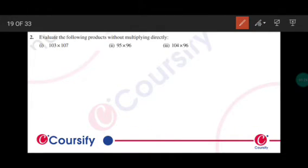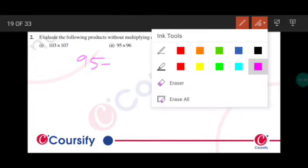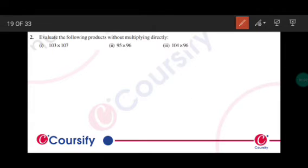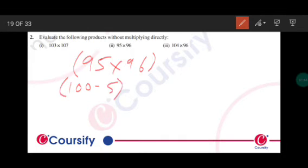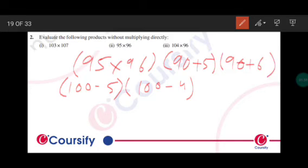Next part: 95 multiplied by 96. So in this we can write 100 minus 5 and 100 minus 4. In this we could have also written it as 90 plus 5 into 90 plus 6, but multiplication of 90 will be much more complicated or difficult as compared to 100. So multiplying 100 and its square is much easier, so I choose this. You could have chosen this, this is also correct.